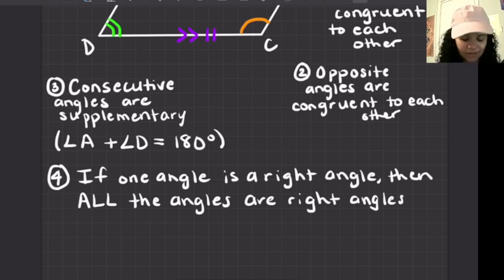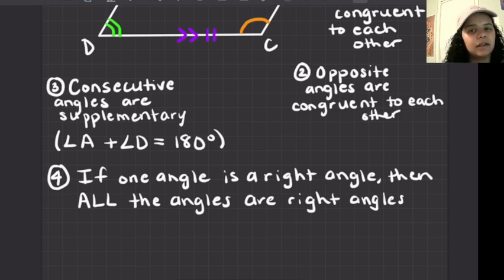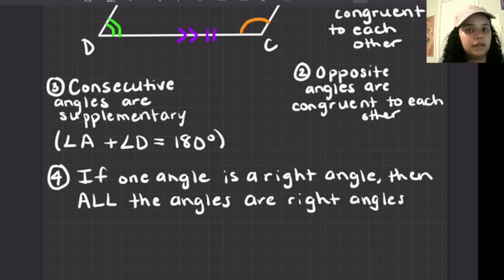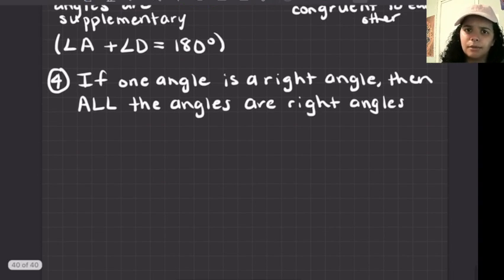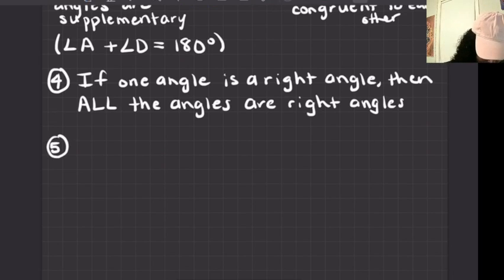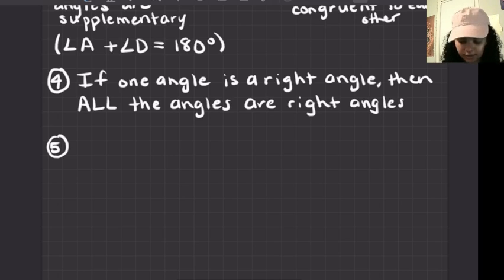If all the angles are right angles, that parallelogram can also be called a rectangle. Quadrilaterals can be named multiple things — a square can be considered a rectangle, but a rectangle can never be considered a square; however, a rectangle can be considered a parallelogram.